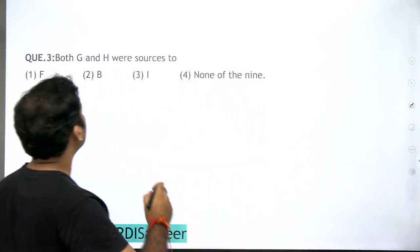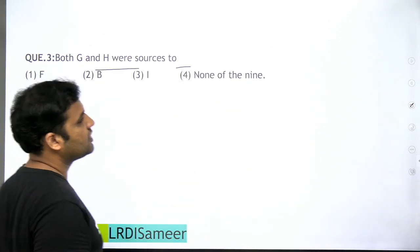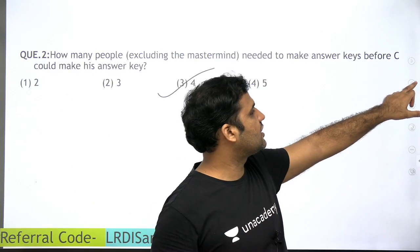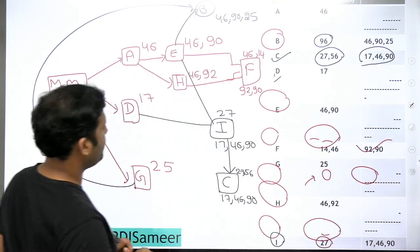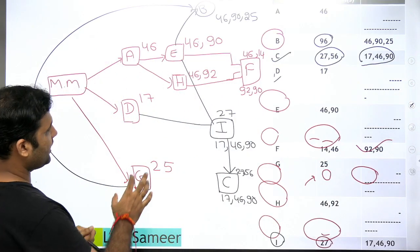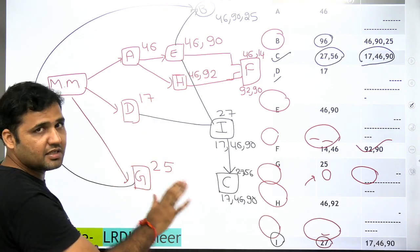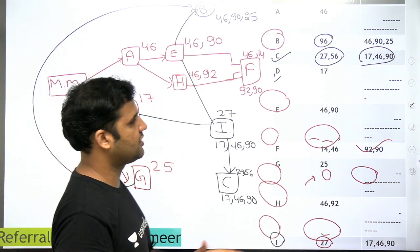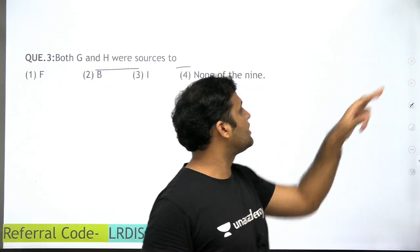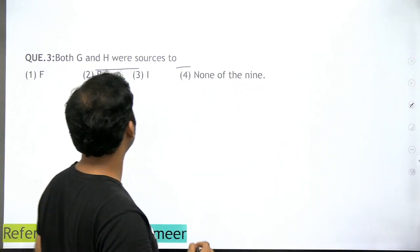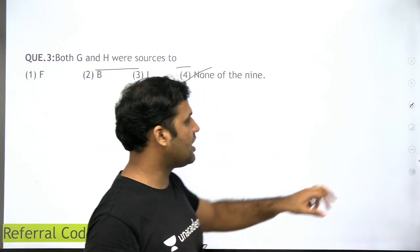Next question: both G and H were sources to whom? Looking at the flowchart, G and H combined are not sources to any single person — G gives to B, and H gives to F separately. So the answer will be none of the nine, which is option D.